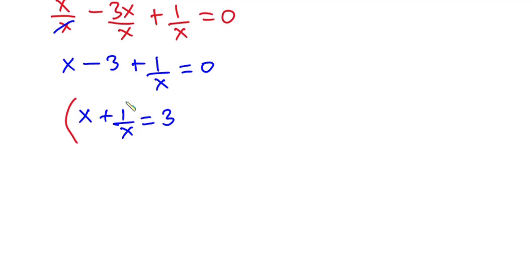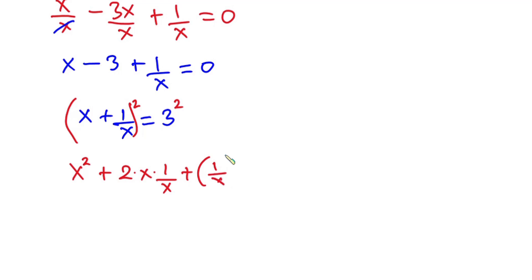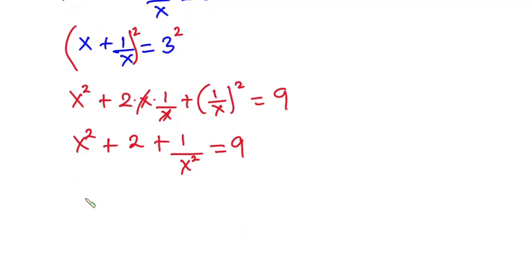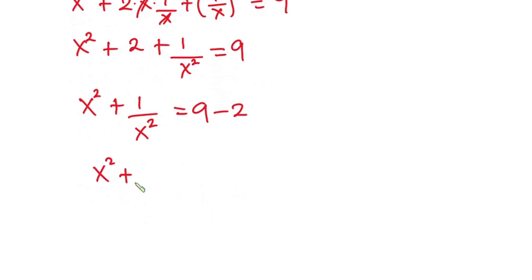From x plus 1 over x equals 3, let's raise each side to the second power and expand. Expanding, we have x squared plus 2 times x times 1 over x plus 1 over x squared equals 9. The x terms cancel, giving us x squared plus 2 plus 1 over x squared equals 9. Making x squared plus 1 over x squared the subject, we get x squared plus 1 over x squared equals 7. I'll call this equation star.